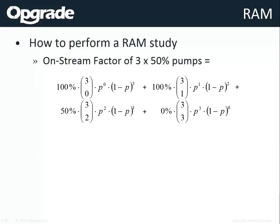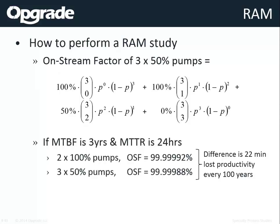Using the binomial combinations — three choose zero, three choose one, three choose two — if none of the 50% pumps are offline, production is 100%; if one is offline, you're still at 100%; if two are offline, you're at 50%; if all three are offline, you're at 0%. Adding it all up: two pumps at 100% gives 99.9999992% on-stream, and three 50% pumps gives 99.9999888%. The difference is only about 22 minutes of production over 100 years — effectively identical reliability. Unless there's a significant difference in reliability between the pump types, three 50% pumps is a clear, lower-cost solution.